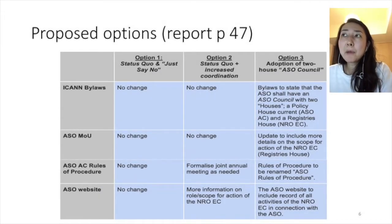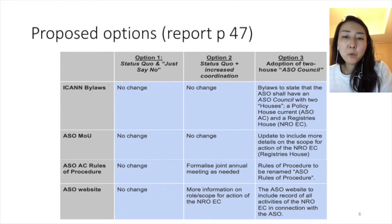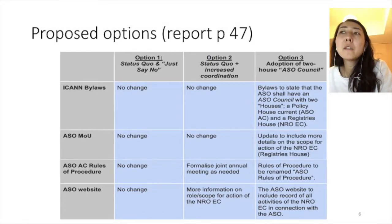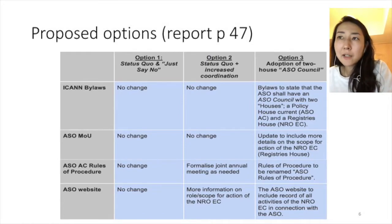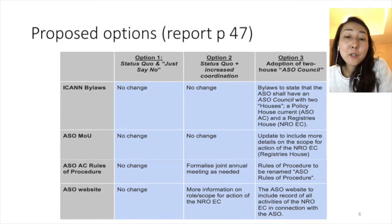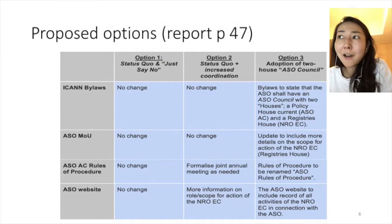There are three proposed options in the report on how we can move forward to address this issue. Option one is to do nothing, keep the stages closed, which means we don't see the need for any improvements — we're just happy with the way things are.